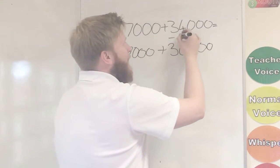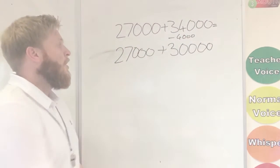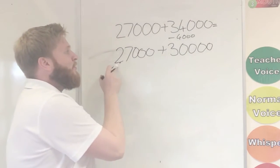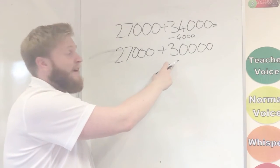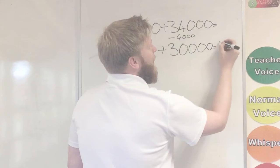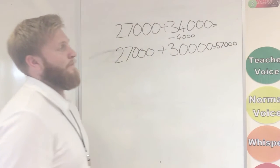But this time I've took 4,000 off. So again, I can do this sum, easy in my head. 27,000 plus 30,000, I know 2 plus 3, because they're both in the 10,000s column, I can easily do that, is 5. So my answer is 57,000.